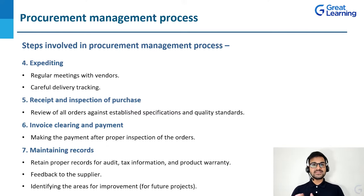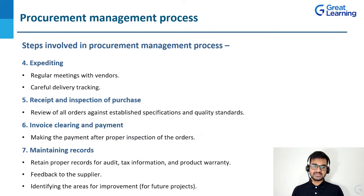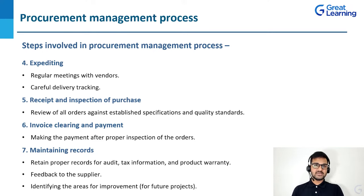If the quality and quantity standards are not met, you talk to the vendor again to make sure they follow the required standards and timely delivery. Once everything is good to go after inspection, you make the payment — invoice clearing and payment is done. Last but not least is maintaining records, which is important for audits, tax information, product warranty, giving feedback to the supplier, and identifying areas of improvement for future projects.